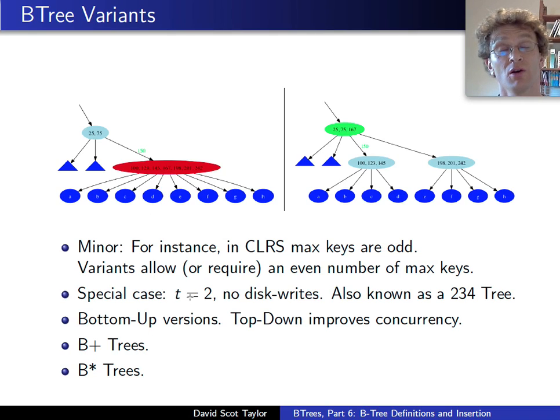B-star trees, you say, instead of having the minimum-sized tree be about half the size, the minimum-sized node would be about half the size of a maximum-sized node. Instead, we're going to try to have it be, say, two-thirds of the size of a max-sized node. Just something to make you a little bit more space efficient. Anyway, there's lots of variants out there.